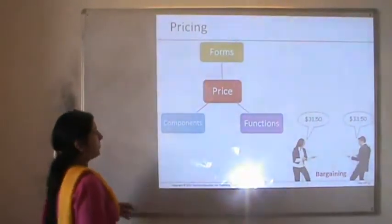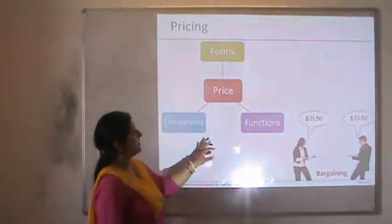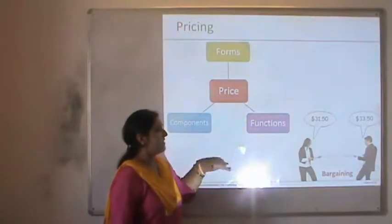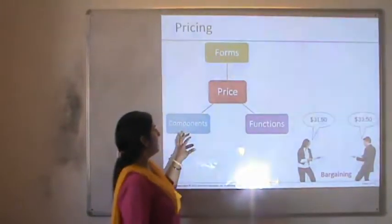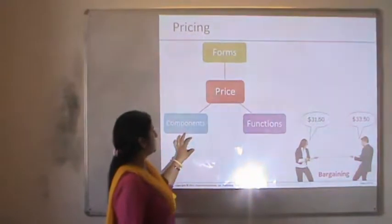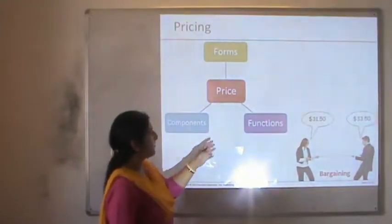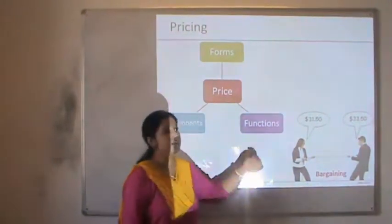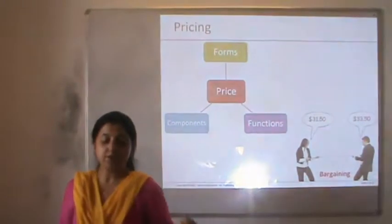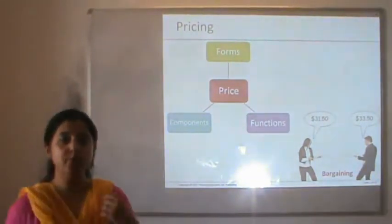Price largely is the sum total of the components which go into the constitution of the product plus the function that the product performs. For example, if you are talking about soap — its shape, size, color, ingredients, fragrance — and at the same time the functions it performs.